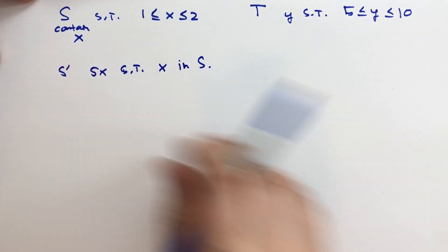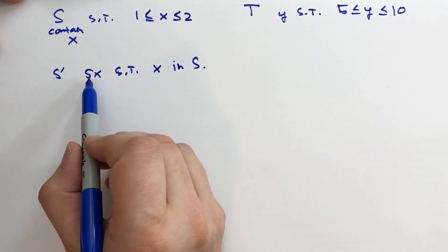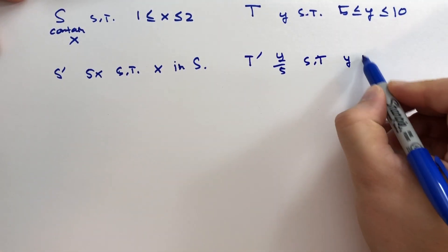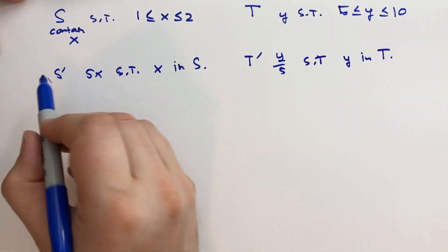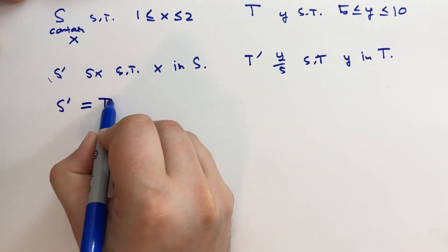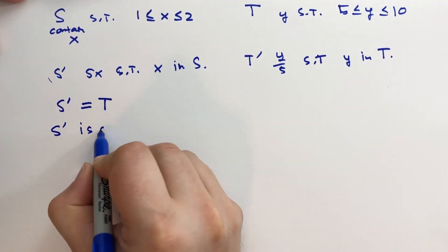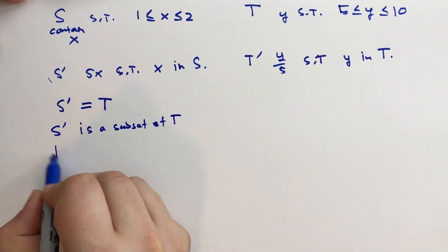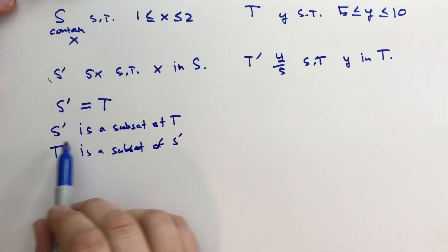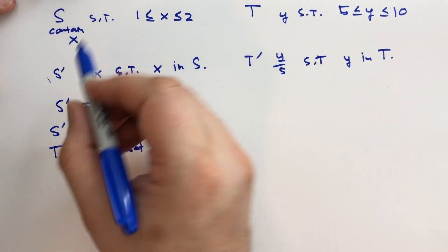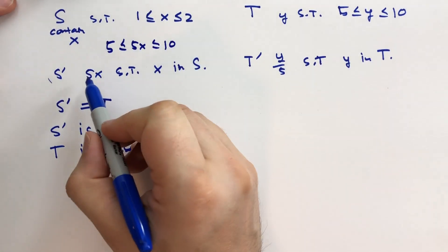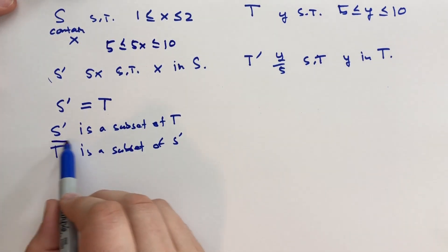And it's also going to, S prime is going to contain 5X. And over here, we're going to have T prime contains all Y over 5, such that Y is in T. And we want to prove that S prime and T are the same. In order to do that, we have to show that S prime is a subset of T, and T is a subset of S prime. So we have to prove both of these. So in order to prove that S prime is a subset of T, we note that when we take 5X, so we note that 5 is less than or equal to 5X is less than or equal to 10. So note that we could substitute in Y, we have the same conditions for T. So therefore, S is a subset of T.